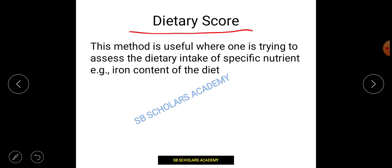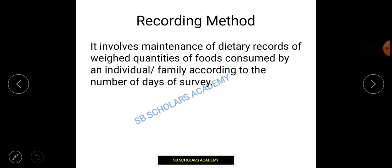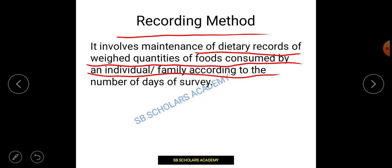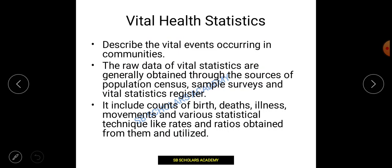The dietary score method is useful when trying to assess the dietary intake of a specific nutrient — for example, if you need to know how much iron content is in a particular individual or community. The recording method involves maintaining dietary records of the weight and quantity of food consumed by an individual or family over a number of survey days.